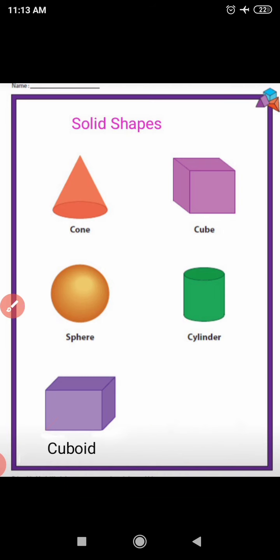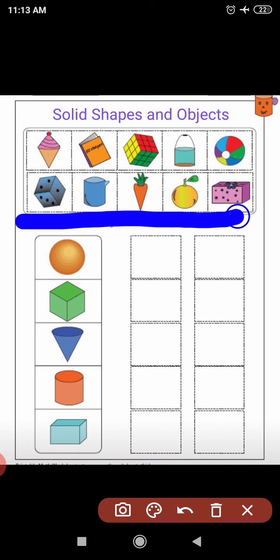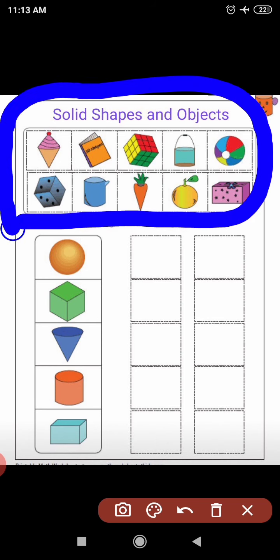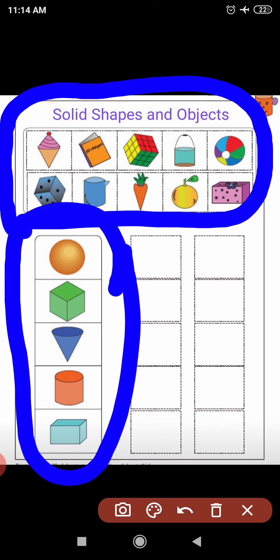Now students, look at these solid shapes. You will tell me the name of these things and which solid shapes are matching to these objects. You can see these objects — do you know their names? You will tell me which solid shape they match with. The solid shapes are here and the objects are here.